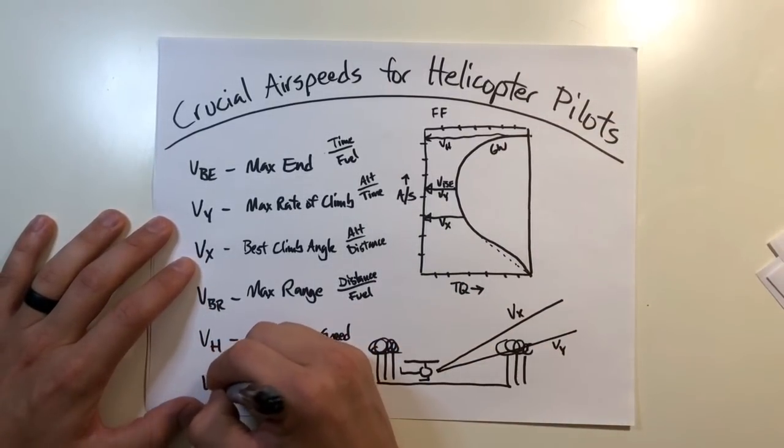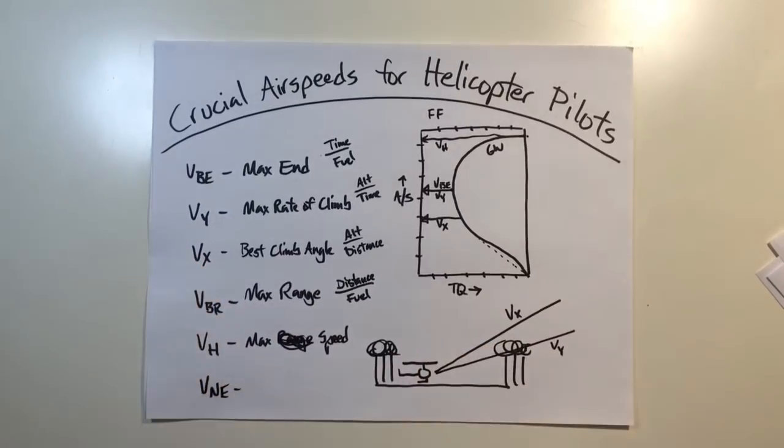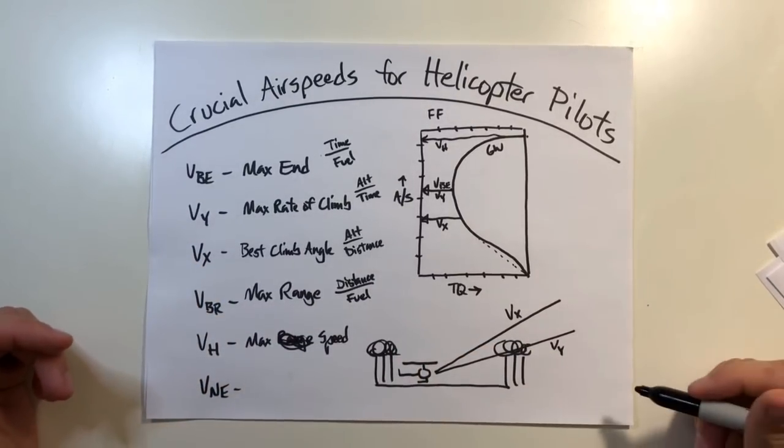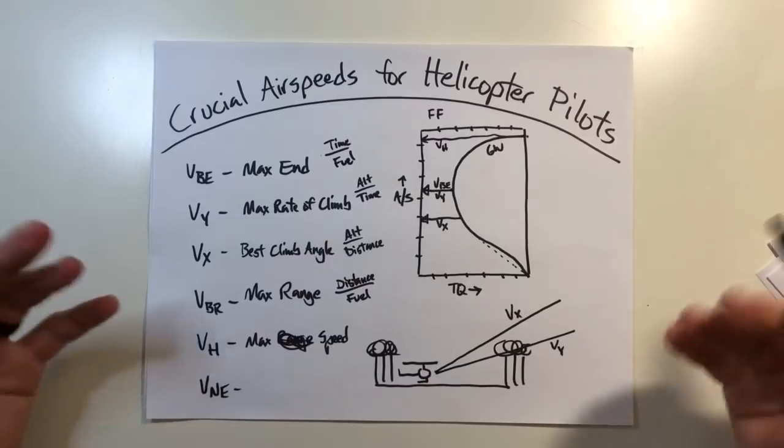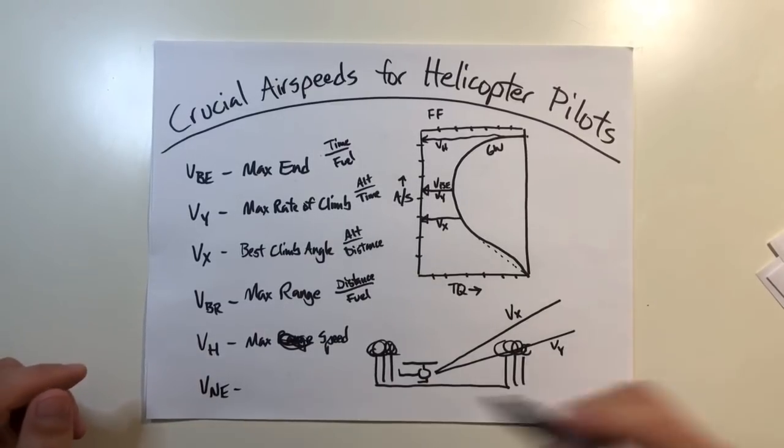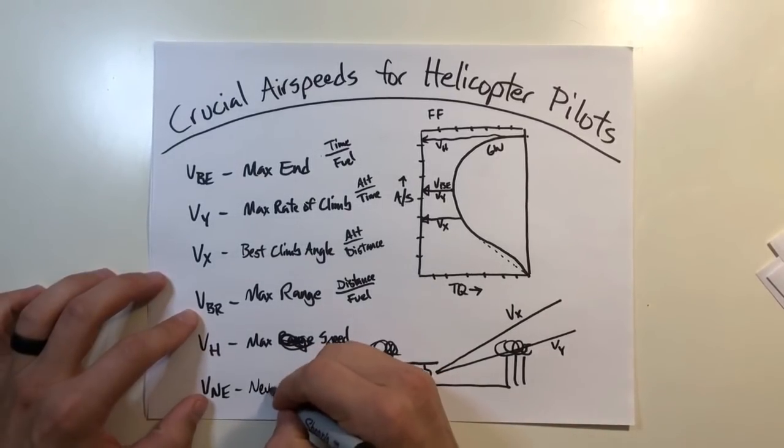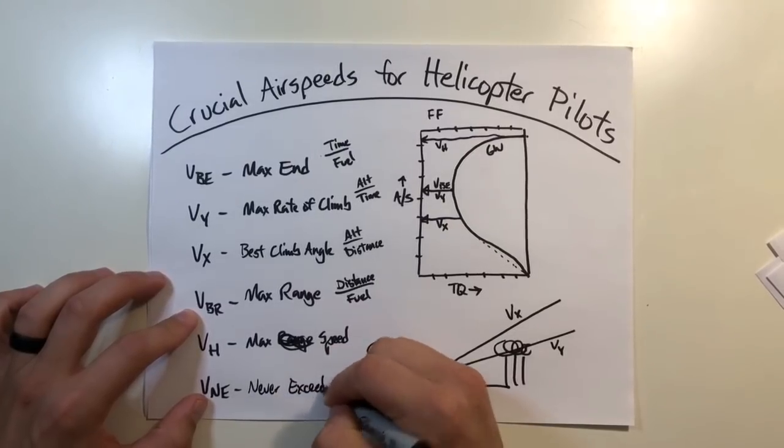Last is going to be VNE. This is the velocity never exceed, I have an entire video about this, but basically if you exceed this, you can get into your retreating blade stall and damage to the helicopter. I'll put a link to a video here, but just keep in mind to never exceed this value.